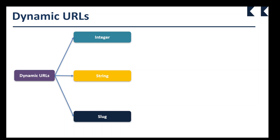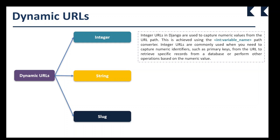Before creating a dynamic URL, let me explain what types of dynamic URLs we have in Django. Dynamic URLs can be three types: integer dynamic URL, string dynamic URL, and slug dynamic URL. Integer URLs in Django are used to capture numeric values from the URL path. This is achieved using the syntax less-than integer double-colon variable-name greater-than, which we write in the URL file.